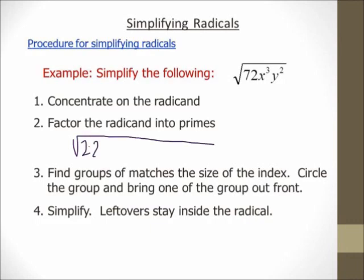72 is 2 times 2 times 2 times 3 times 3. This looks a lot like GCF, and it is kind of like it, but we're going to do something different with it. Step number three: find groups matching the size of the index. Since the index is a 2, I'm going to circle groups of two like things. If the index was a 3, I would circle groups of three of the same thing, but in this case, since it's a 2, I'm going to circle pairs of numbers and letters.